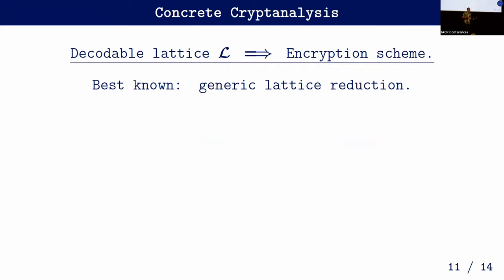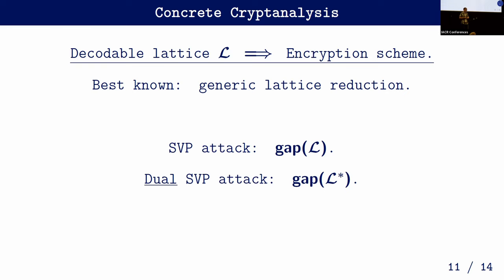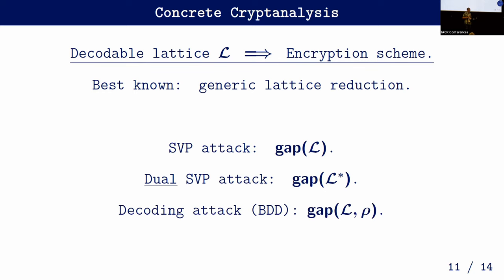What is the concrete cryptanalysis at the moment? Any decodable lattice gives us an encryption scheme, and the best known attacks are generic lattice reduction. The cost depends on the gap between the first minimum and the Minkowski bound, the dual lattice gap (since isomorphic lattices have isomorphic duals), and the decoding gap. So you need to ensure all three gaps are small.